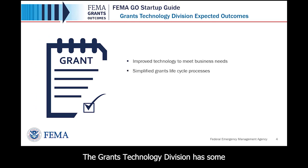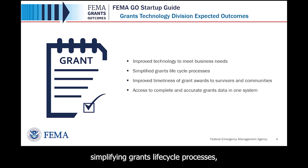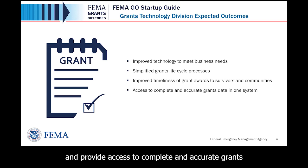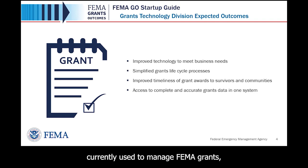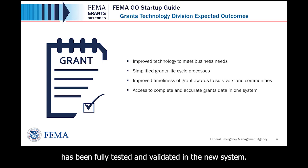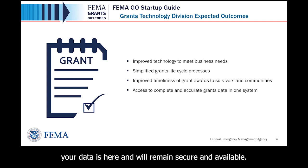The Grants Technology Division has some expected outcomes: to improve technology to meet business needs, simplify grants lifecycle processes, improve timelines of grants awards to survivors and communities, and provide access to complete and accurate grants data in one system. FEMA GO will replace the legacy systems currently used to manage FEMA grants, but the legacy systems won't go offline until their functionality has been fully tested and validated in the new system, so your data is here and will remain secure and available.